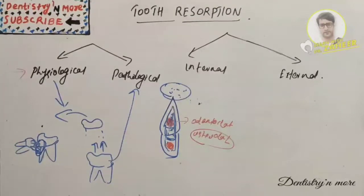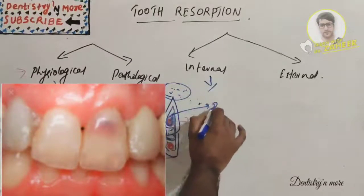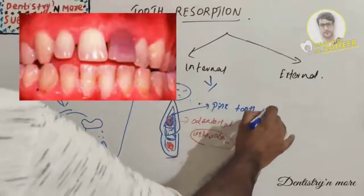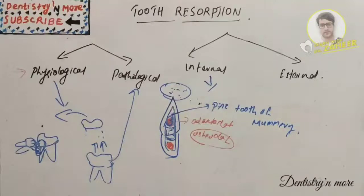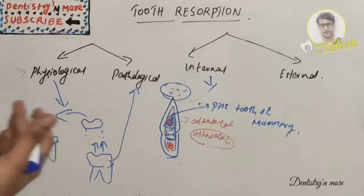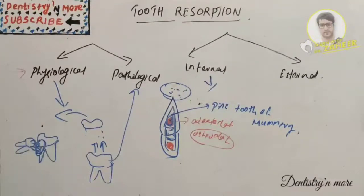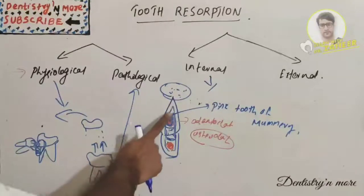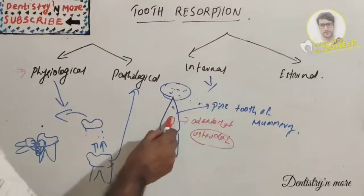A rounded pink area appears where the vascular pulp has become visible through the attenuated hard tissue — this is known as the 'pink tooth of Mummery.' It is usually asymptomatic and may be detected by chance on routine radiographs. Radiographically, the canal shows an enlarged area with sharp, smooth, and clearly defined margins.